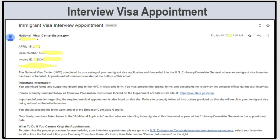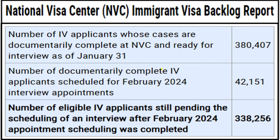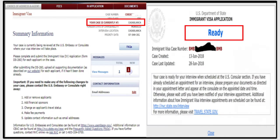This is the February NVC immigrant visa backlog report. As of January 31st, there were 380,407 documentally completed cases at NVC. They scheduled 42,151 interviews for February 2024, and the backlog went up significantly during February. Once NVC sends you to your consulate, if you check your status in your NVC account, the status will change to the city of your consulate — for example, Casablanca. If you check the status online, it will show as ready, meaning ready for interview.